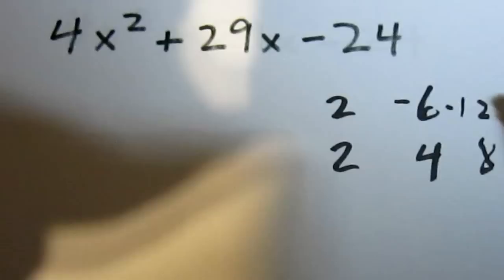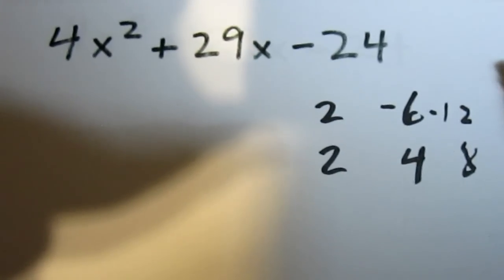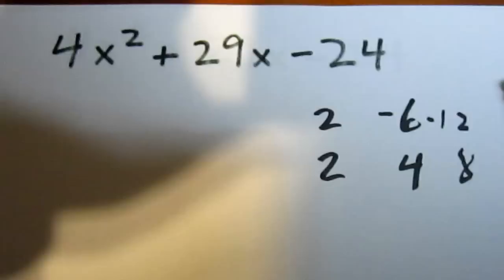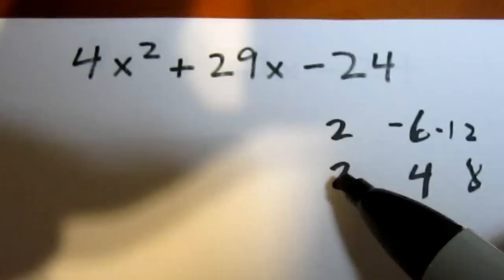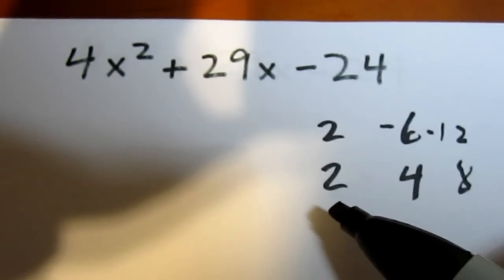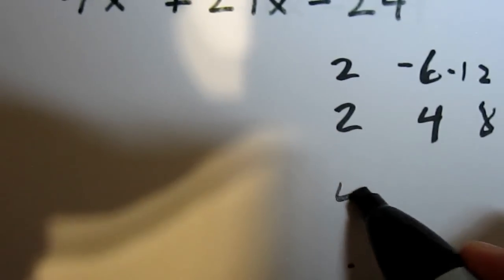So at first glance, we might say, geez, we can't do this question. But that's not true because the error might be in the original column. Instead of trying 2 and 2 as numbers that multiply to 4, maybe we need to try 4 and 1.